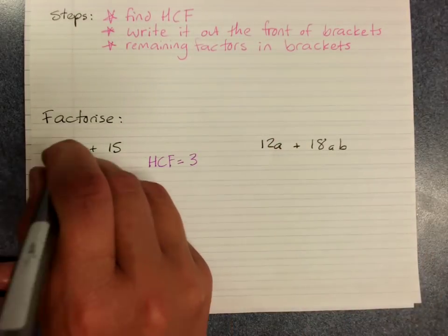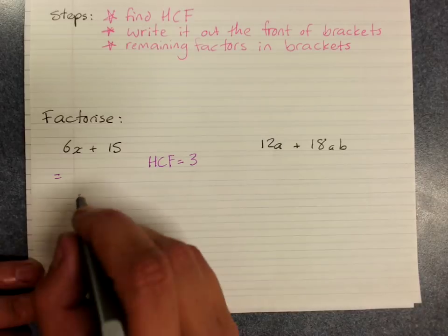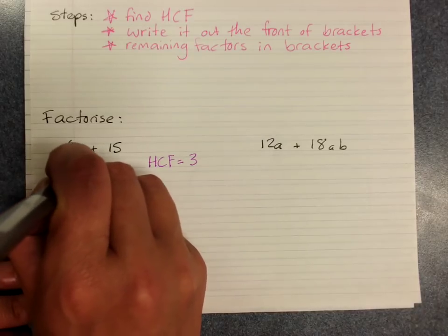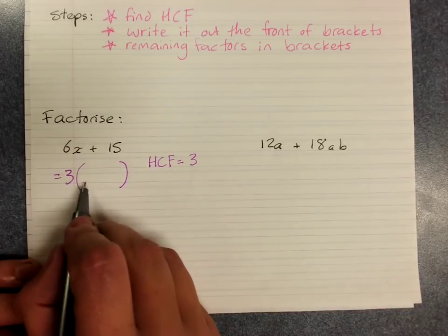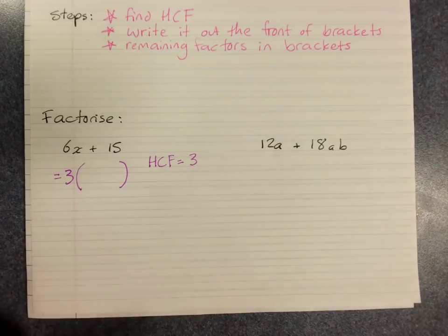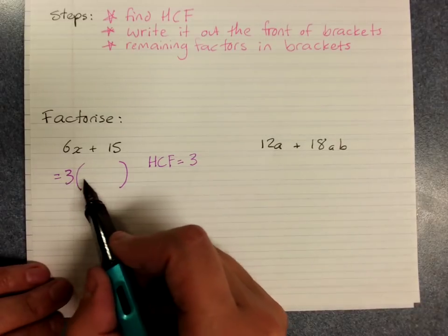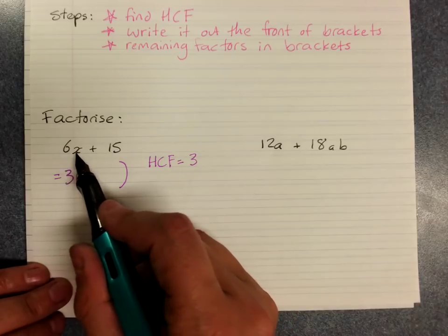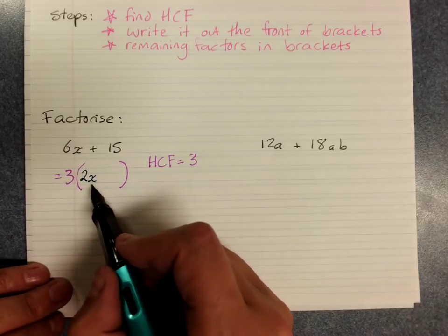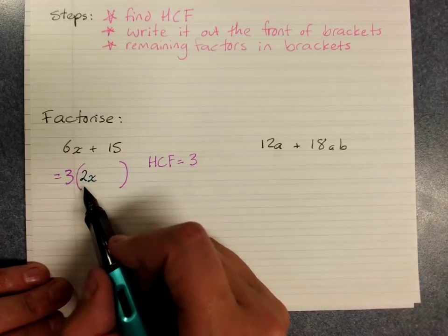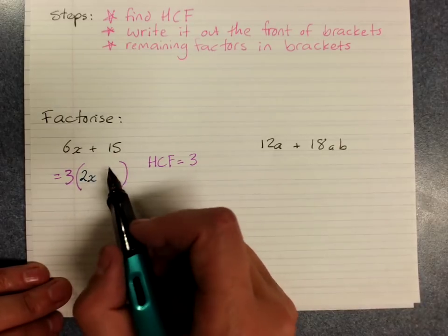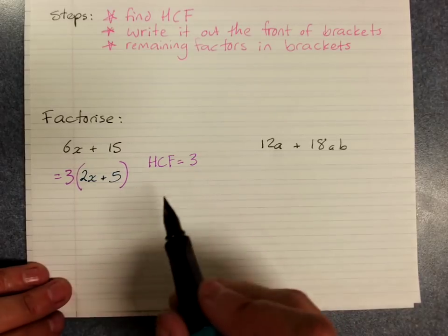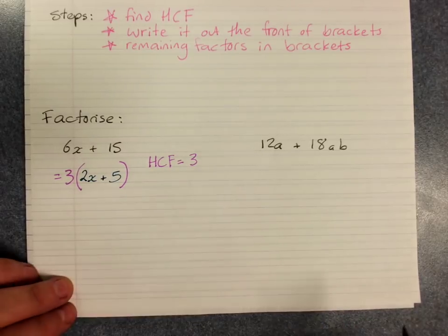So we put an equal sign under or next to our expression. We put 3 out the front and we put the brackets. And then the terms that go here, we ask ourselves the question, 3 times what would give me 6x? Well, 3 times 2x would give me 6x. 3 times what would give me this positive 15? That would be times a positive 5. So we've factorized that.